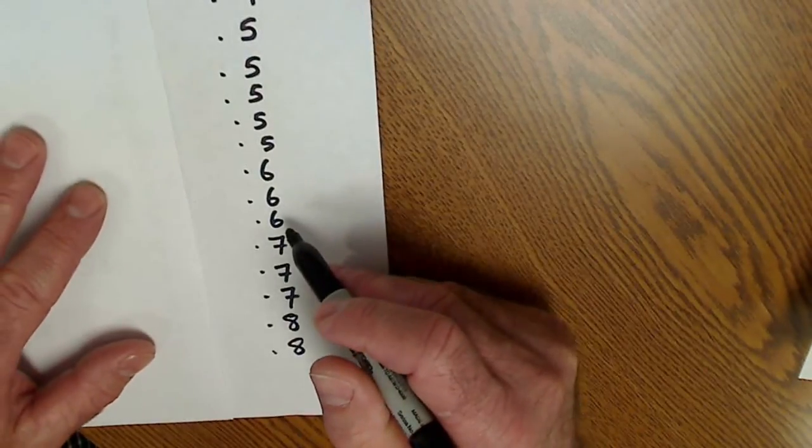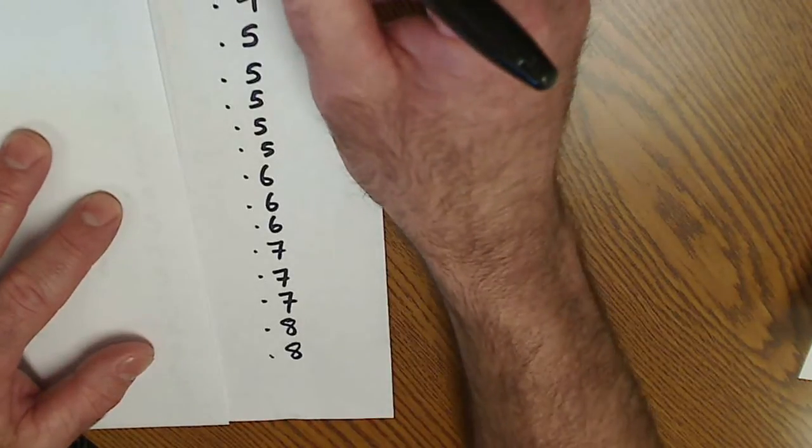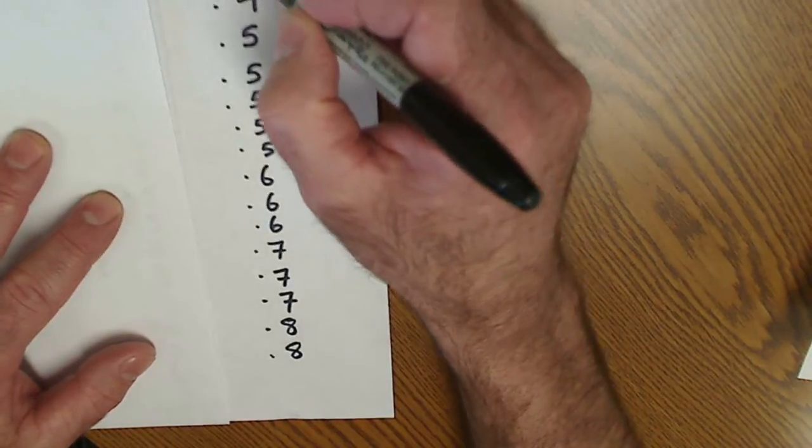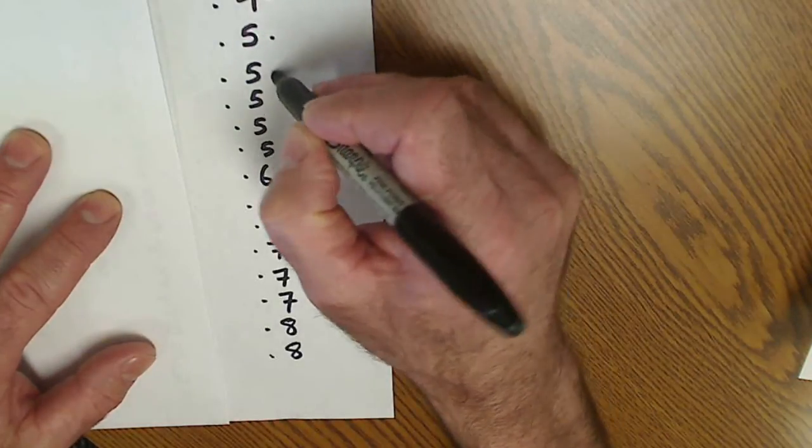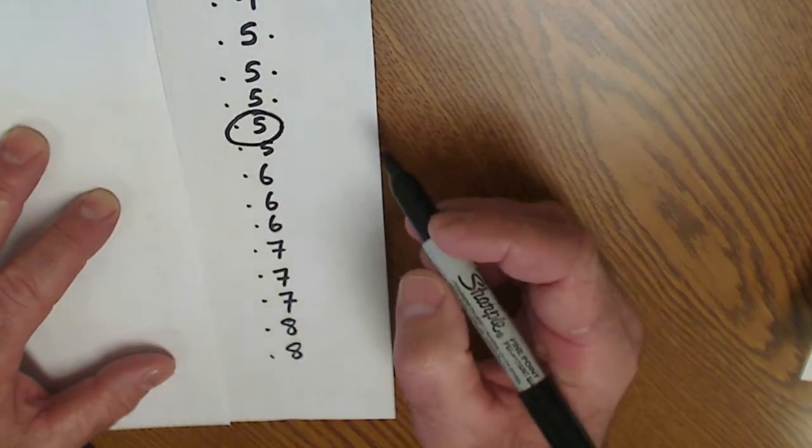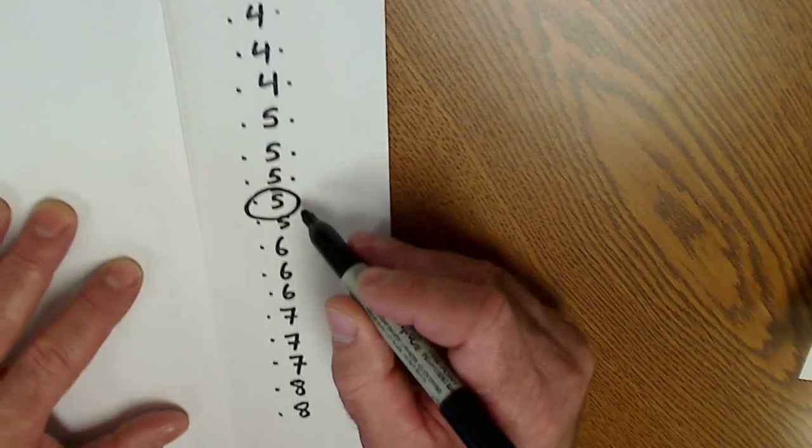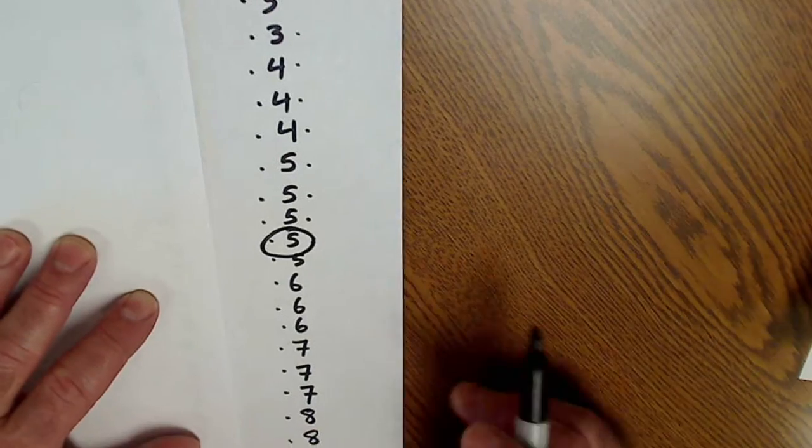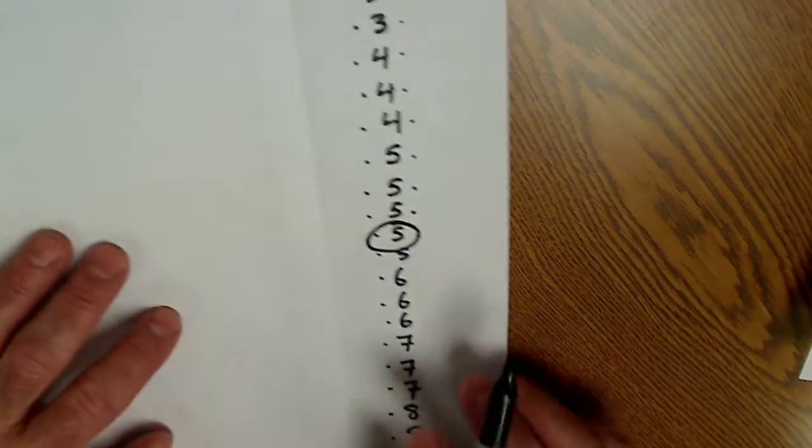There are a total of 19 values, so I count down 1, 2, 3, 4, 5, 6, 7, 8, 9, 10. That tenth value will be my median. So that tenth value will have nine values above it, nine values below it, so my median is 0.5.